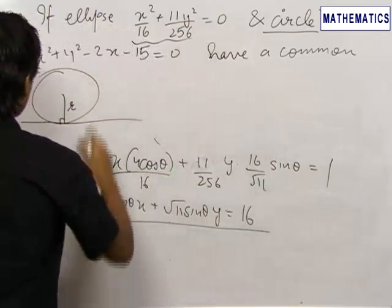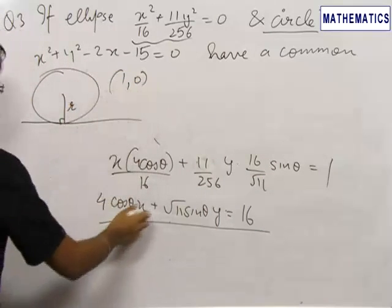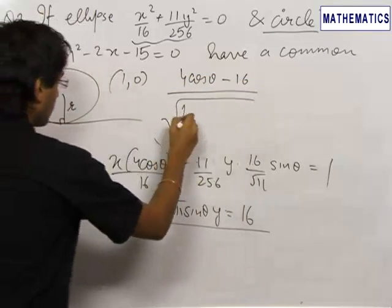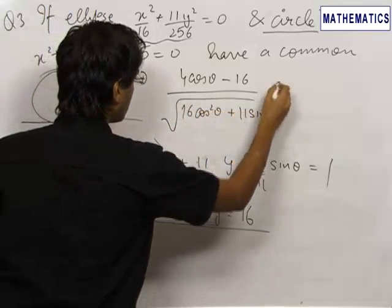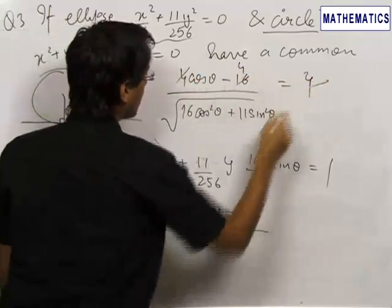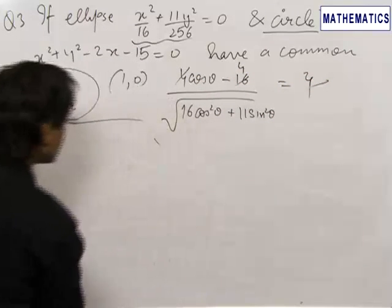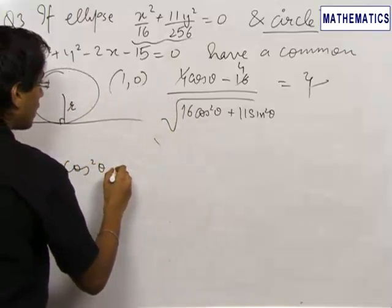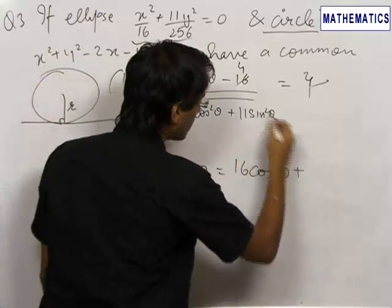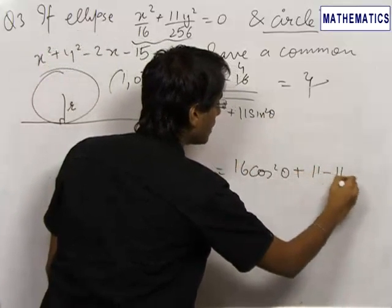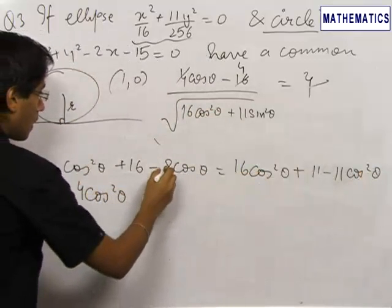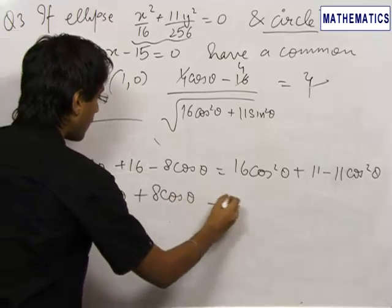The center of the circle is (1, 0). Dropping a perpendicular from (1, 0) onto the tangent line gives: |4 cos θ − 16| / √(16 cos²θ + 11 sin²θ) = radius = 4. The 4, 16, and 4 cancel. Squaring both sides: (cos θ − 4)² = 16 cos²θ, which expands to cos²θ + 16 − 8 cos θ = 16 cos²θ. Simplifying using 11 − 11 cos²θ, this gives 15 cos²θ + 8 cos θ − ... ultimately becoming 4 cos²θ + 8 cos θ − 5 = 0.